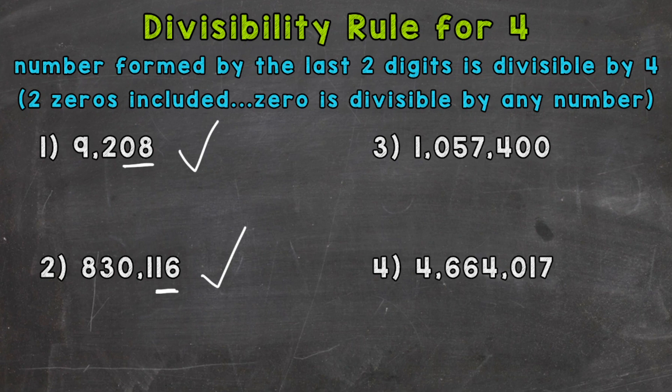Number 3, we have 1,057,400. Last two digits, we have 0 and 0, which is just 0. So remember, 0 is divisible by any number, therefore divisible by 4, and that means 1,057,400 is divisible by 4 as well.